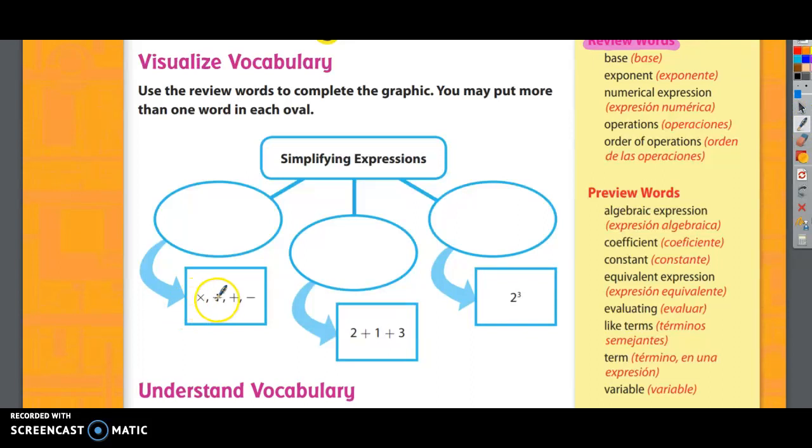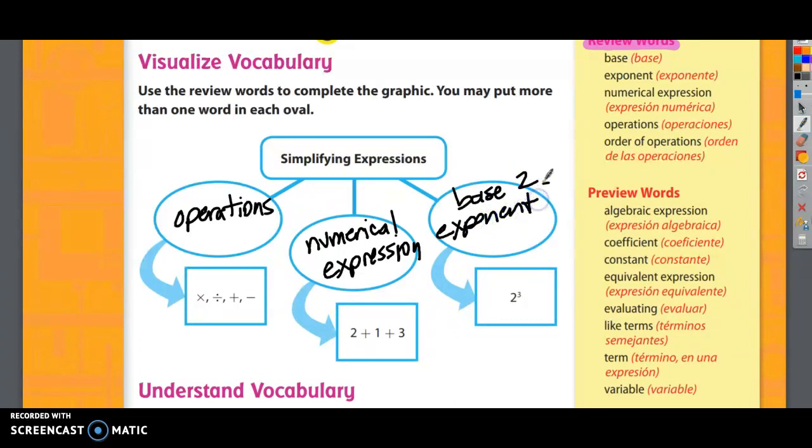What are these things called? Multiplication, division, addition, and subtraction. Those are called operations. So I would put the word operations here. And 2 plus 1 plus 3. What is that? That is a numerical expression. And what would you put in this one? I would put several words in this one. I would put base in this one because the base is 2. I would put exponent in this one. The exponent is to the third power. And I would put order of operations on this one, because one of the order of operations is to solve problems with exponents. So that's the way I'd fill in the top.